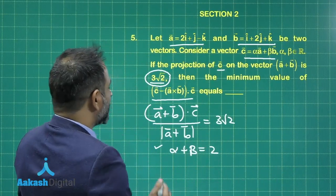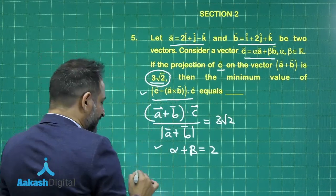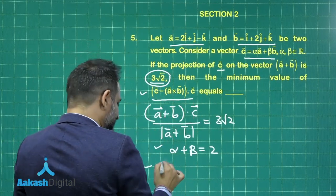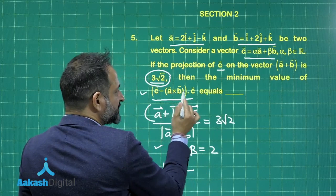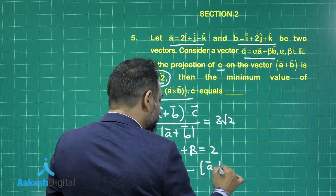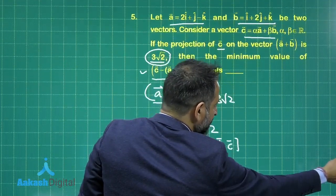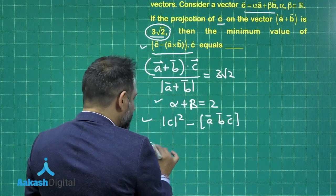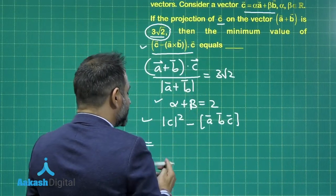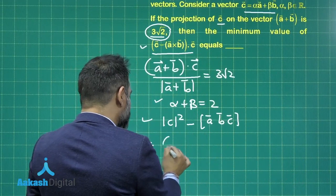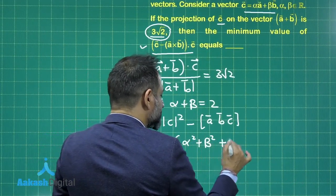Now second this, we have to calculate the minimum value here. So if you calculate this, this is c dot c that is magnitude of c square minus a cross b dot c. So this is the scalar triple product of a, b, c. If you calculate this in terms of alpha and beta, alpha and beta is given in terms, c is given in terms of alpha and beta. So this will comes out to be 6 times alpha square plus beta square plus beta.